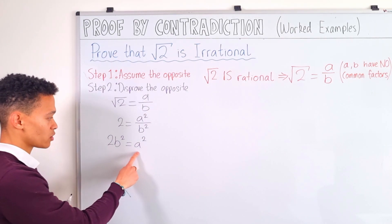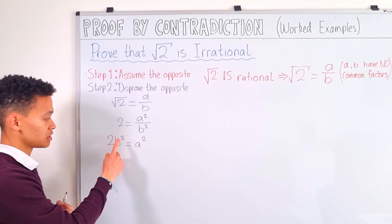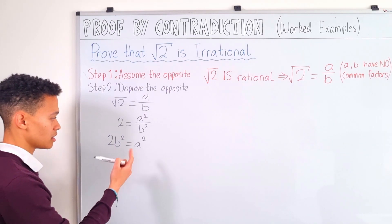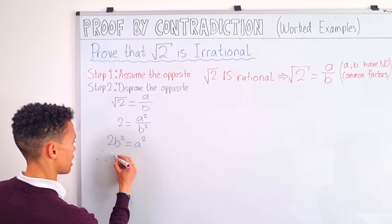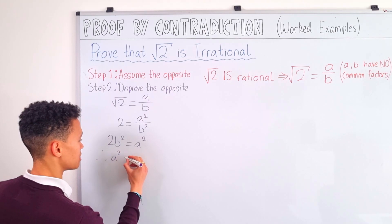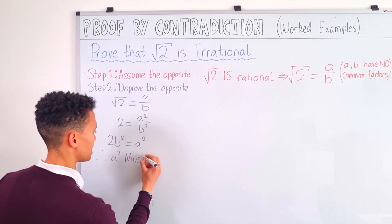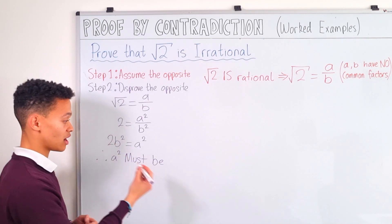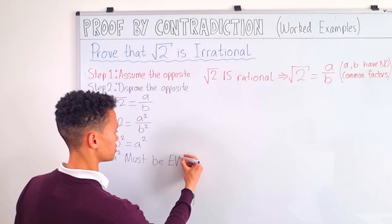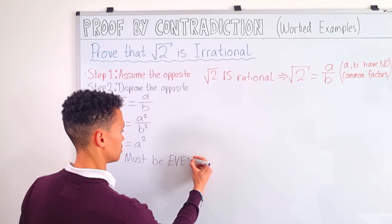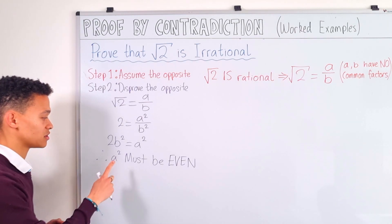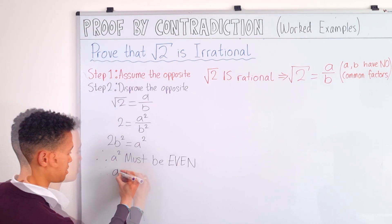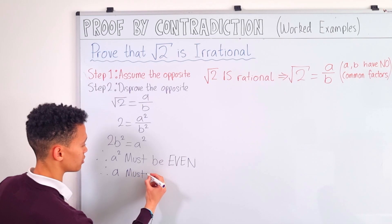Now clearly a squared can be expressed as two times some integer, since b squared must be an integer. Therefore a squared must be even, because it can be expressed as two times an integer. Since a squared is even, its square root a must also be even.